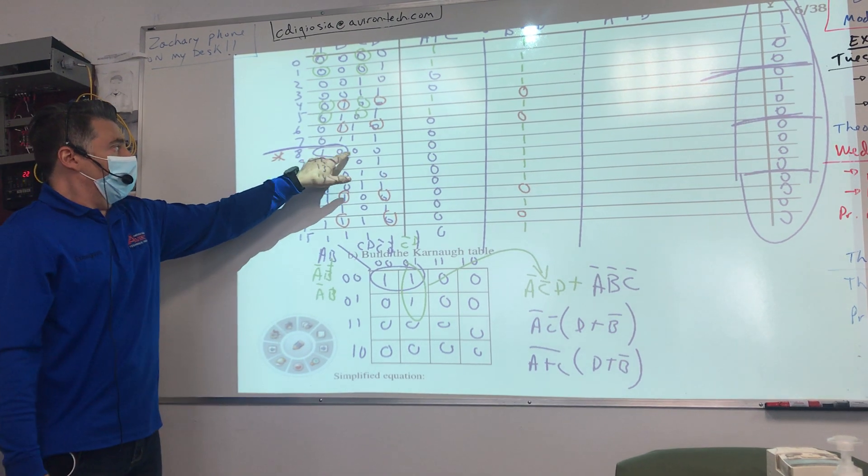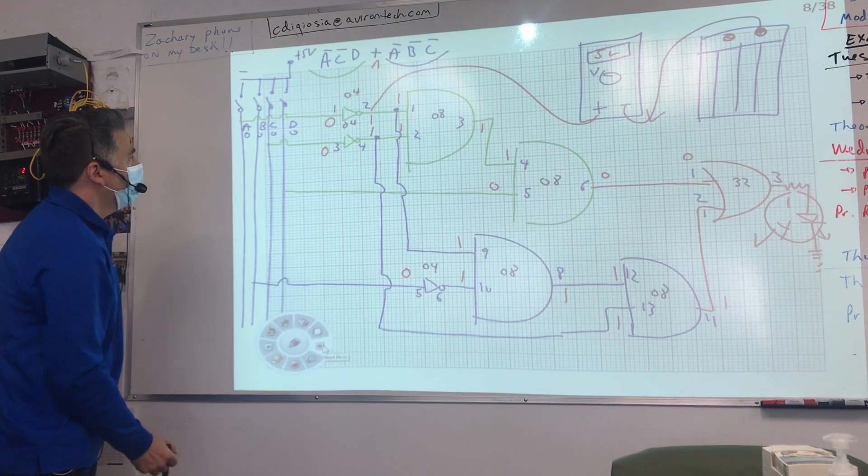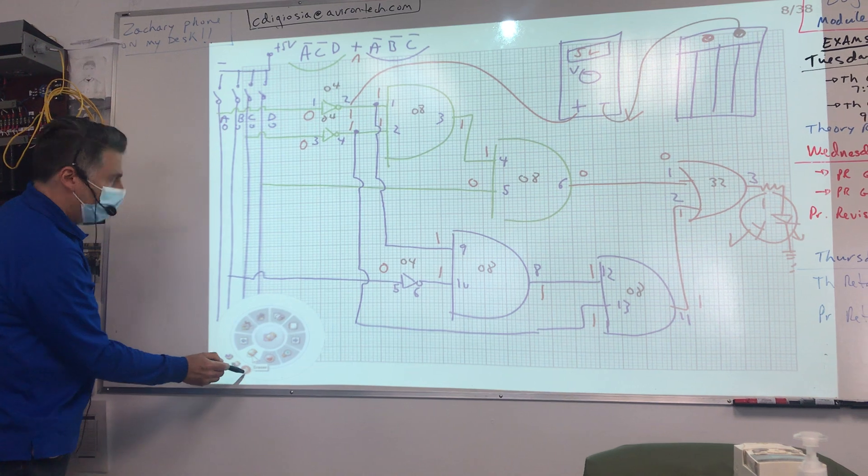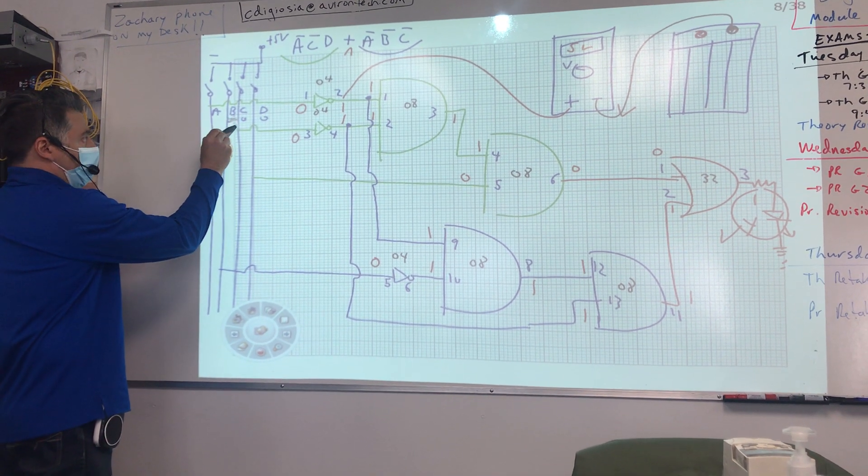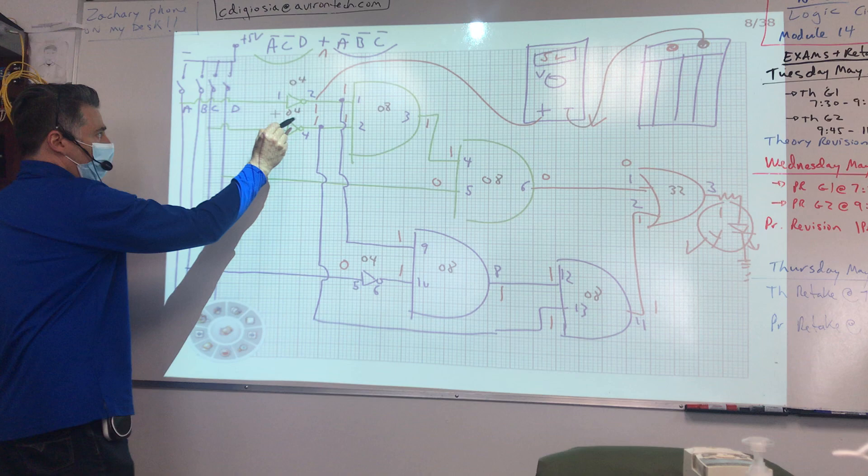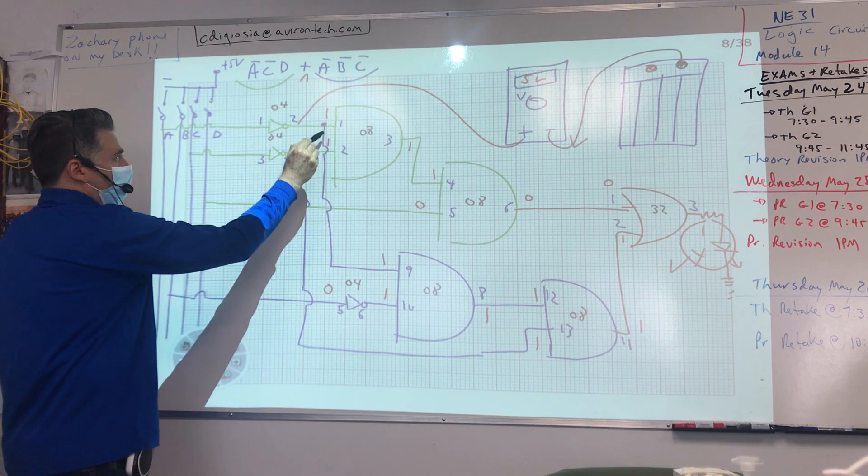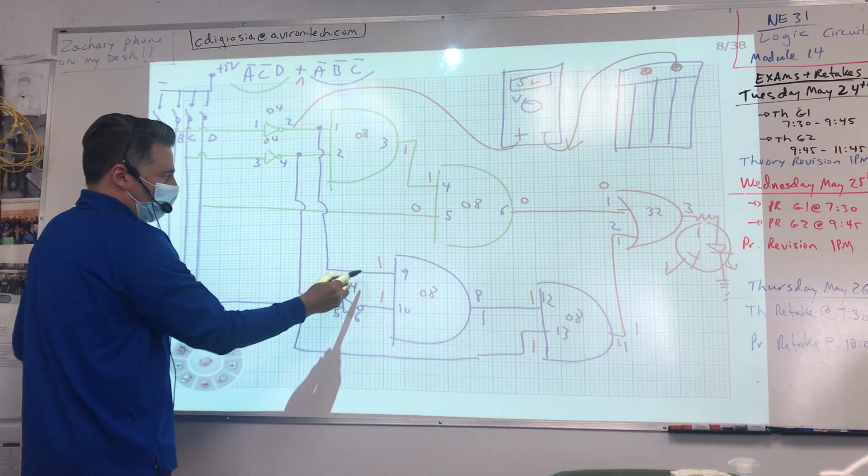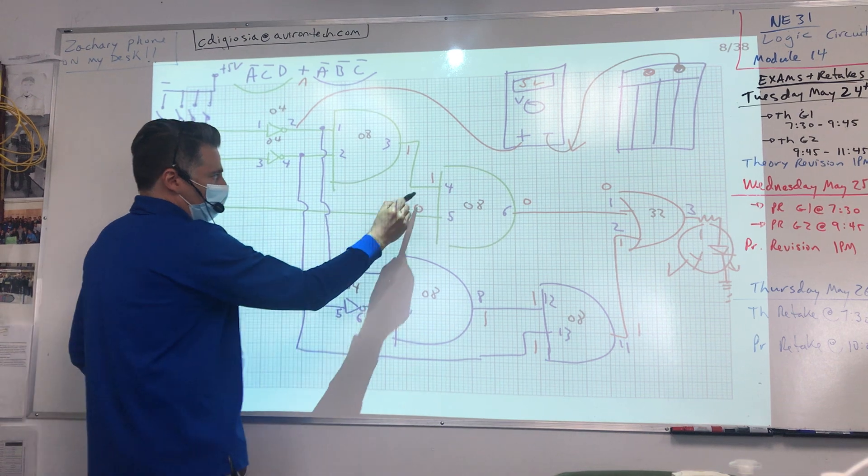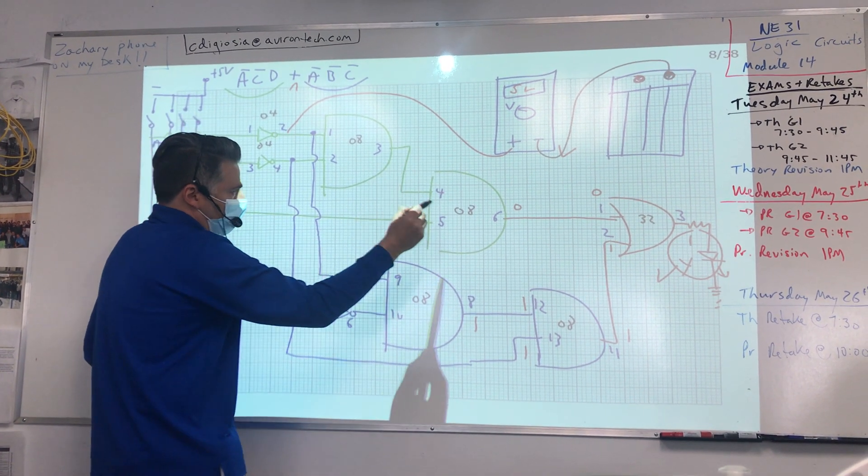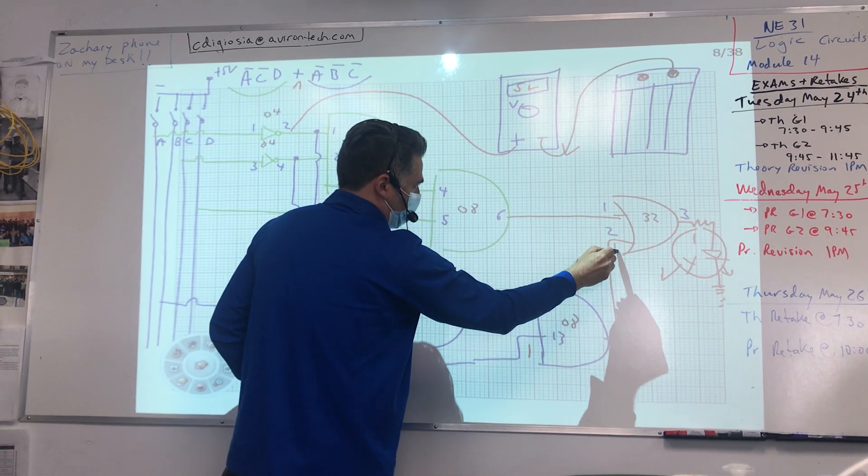You enter one zero zero zero. Well first of all on paper what you're going to do is erase all this. This is why I said when you draw it, spread it out as much as possible because you're going to need to do quite a bit of work with plotting. And if you take any shortcuts it's going to start getting complicated.